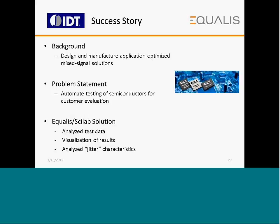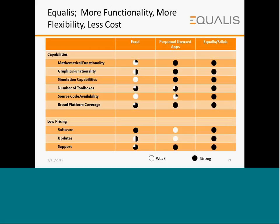From the electronics industry, IDT specializes in design and manufacturing of application-optimized mixed signal solutions. IDT wanted to automate testing of semiconductors for customer evaluation. Equalist-SciLab provided a solution that analyzed test data, provided visualization of systems, and analyzed data characteristics. A comparison of Equalist-SciLab capabilities and cost against Excel and traditional licensed applications shows that Equalist offers more functionality, more flexibility, and lower cost against all available applications in the market.